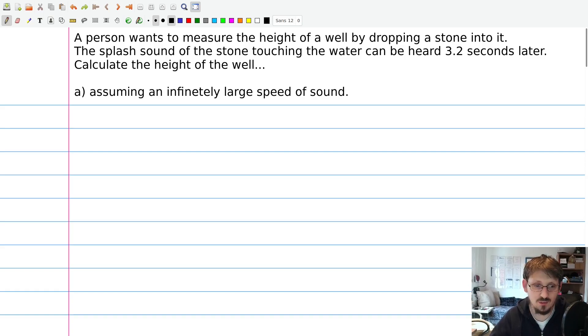And in order to solve this exercise, I always recommend to make a sketch. So we can make in this case a sketch of the well. Let's suppose we have here our ground level and then here we have the well. And here we have the person having the stone here in hand and this is released. So after that, it of course falls down.